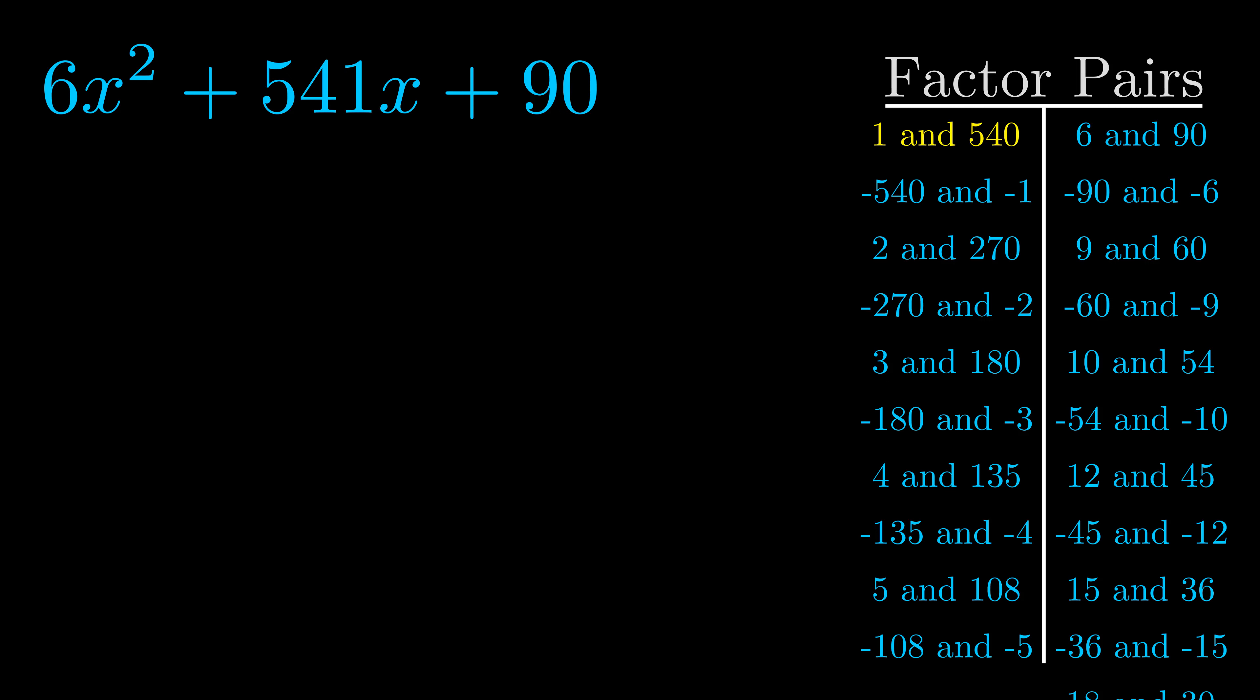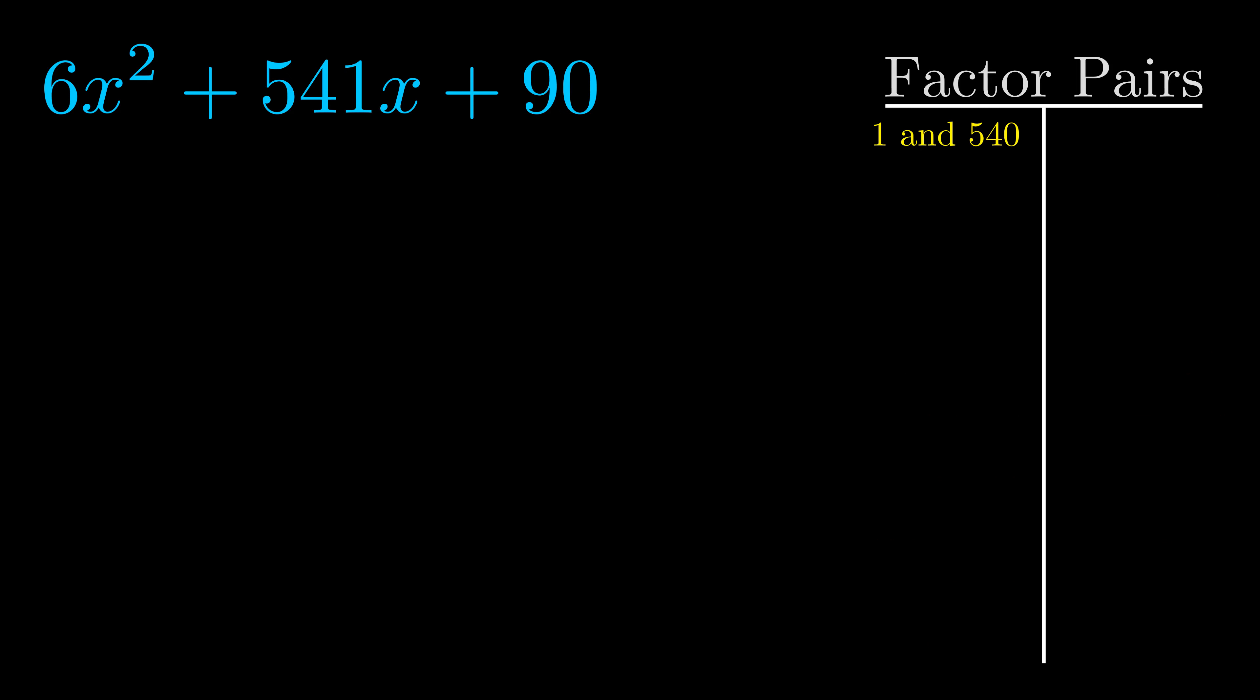And really this is the only factor pair that we need. Now once we have this factor pair, what we want to do is we want to use it to split up the b value.